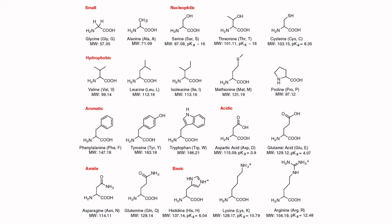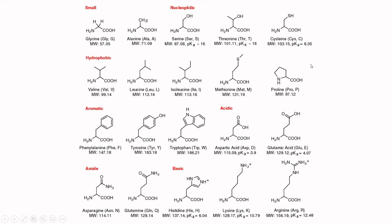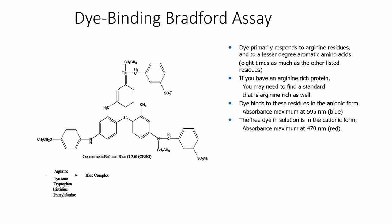The next method is dye binding. The most common dye binding assay is called the Bradford assay, where we use a dye called Coomassie Blue. Coomassie Blue likes to bind to arginine, and to a lesser extent tyrosine, tryptophan, histidine, and phenylalanine. The dye binds to just those five amino acids within the protein, and Coomassie Blue goes from being a brown dye to being a blue dye when interacting with these amino acids.